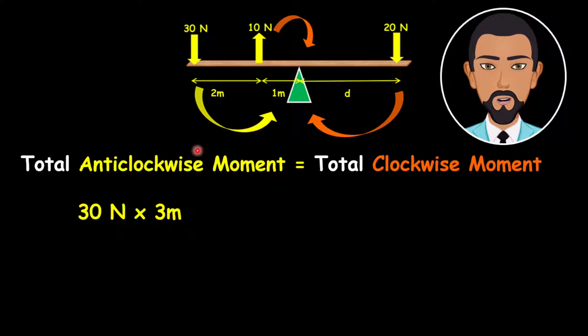Now this will be equivalent to the total clockwise moment. And there are two clockwise moments, one by the 10 newtons and one caused by the 20 newtons force. So let's start with 10 newtons first. So the 10 newtons is 1 meter away from the pivot.